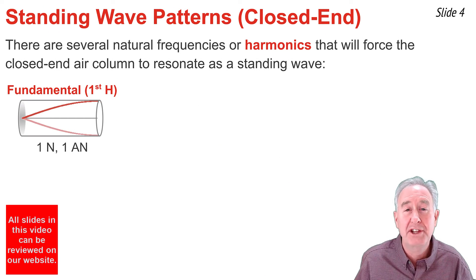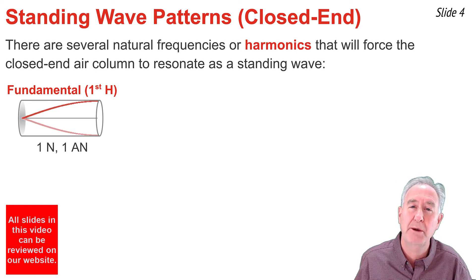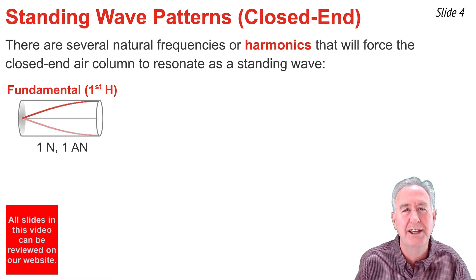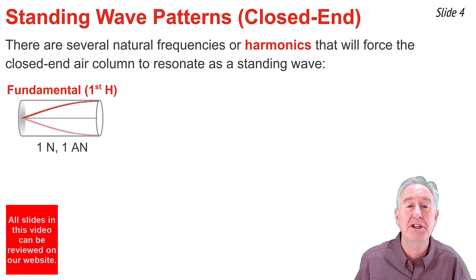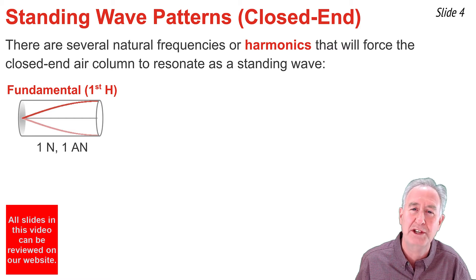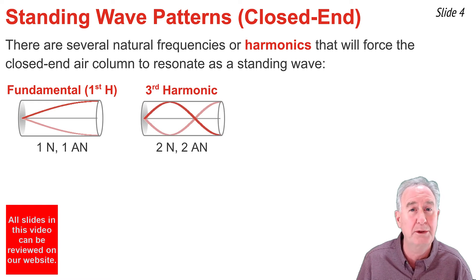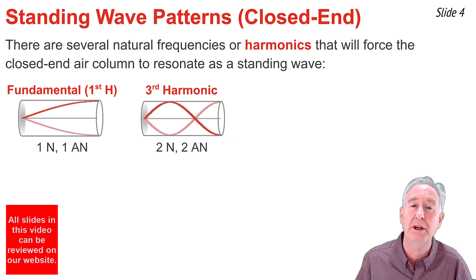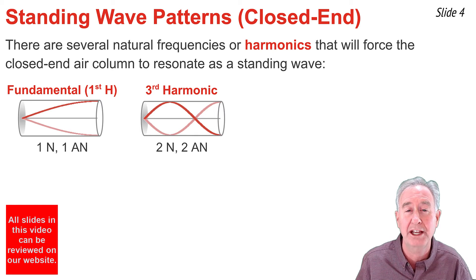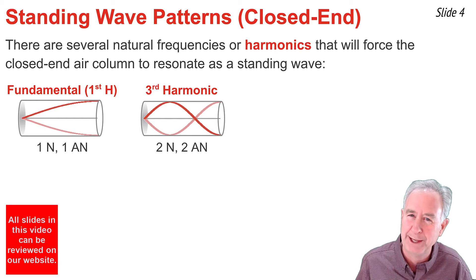The vibrational pattern and standing wave pattern we just saw for the closed-end air column is the pattern for the first harmonic or fundamental frequency. But a closed-end air column has a number of frequencies at which it naturally vibrates, and each one is associated with a standing wave pattern. To draw the next standing wave pattern for a harmonic, we simply add a node and an anti-node to the first harmonic. We keep a node at the closed end and an anti-node at the open end, and in between we add the additional node and anti-node, drawing the best-looking waveform we can.